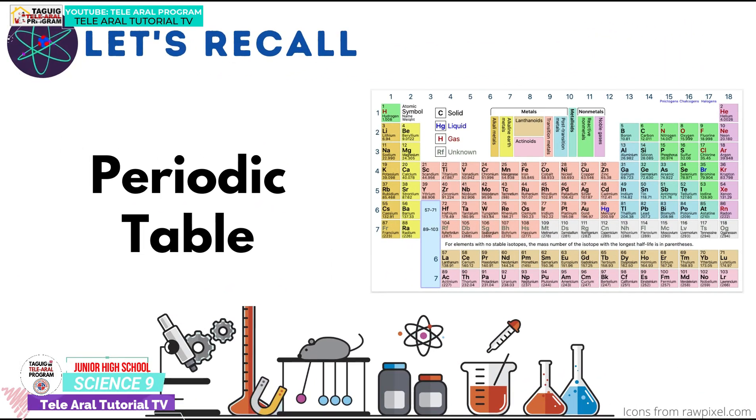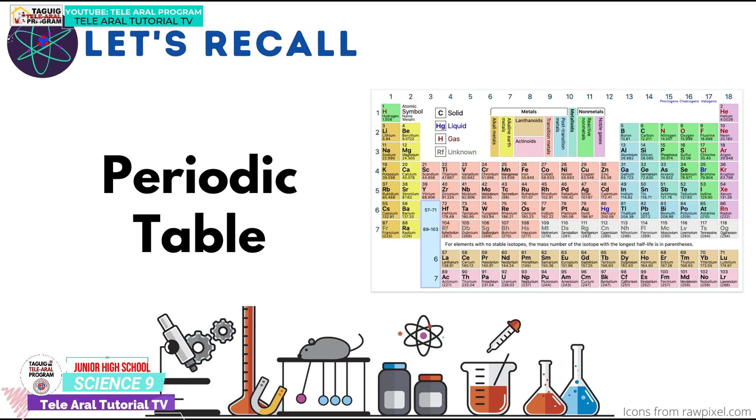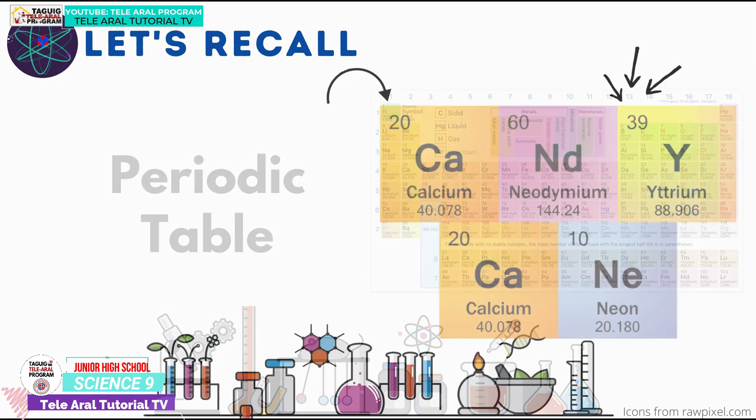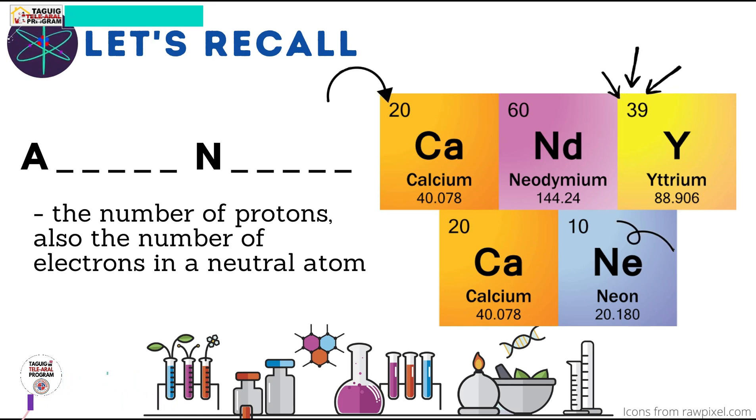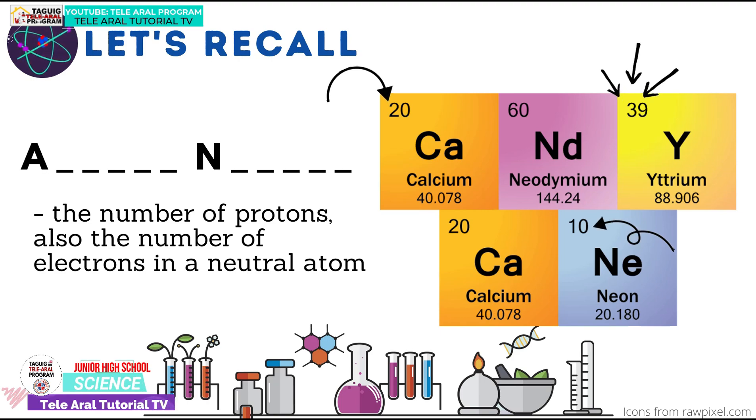Next, what do you call the number of protons, which is also the number of electrons in a neutral atom? You got it! The answer is atomic number.